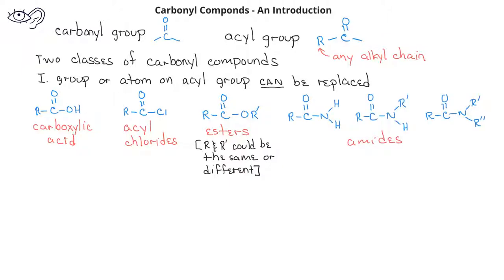Amides are another type of carbonyl compound falling within this first class. In amides, the nitrogen can have two hydrogens, or one hydrogen and one alkyl chain, or two alkyl chains. Again, the different R-groups in the amides can be different, or they can be the same.